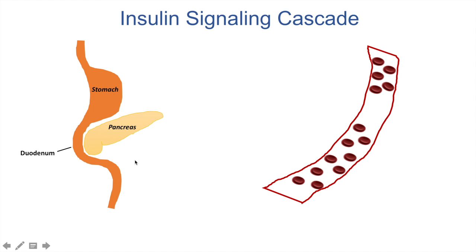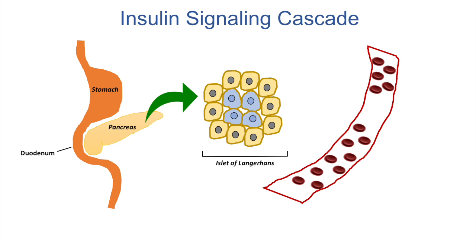There are these islands or groups of cells in the pancreas called the islets of Langerhans. The islets of Langerhans include alpha cells located along the periphery of the island, and beta cells located more near the center of the islet. The beta cells will detect the increase in blood glucose and will release insulin to the bloodstream.